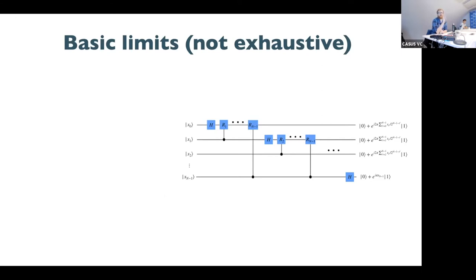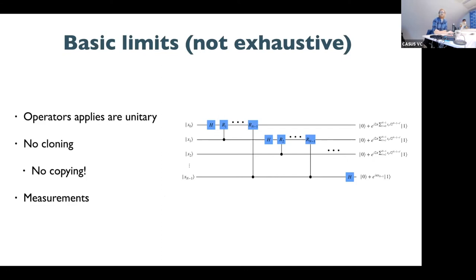Now there are some limitations for the quantum computer. All of the operators that you need to apply are unitary, and as a consequence of that, there's no ability to clone the wave function. On the classical computer, we can take all the zeros and ones that represent the wave function and copy them into a new place, or take one of the coefficients and copy it onto a new place. There's no copying in quantum computing — this is a very fundamental, basic limitation that we're going to have to work around.